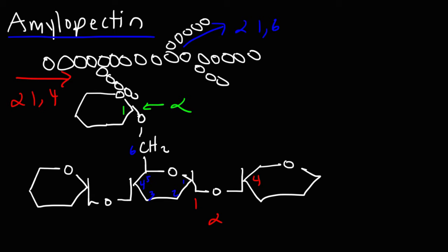So amylopectin contains two types of glycosidic bonds. The alpha 1,4, which is responsible for the straight chain part of amylopectin, and the alpha 1,6 glycosidic bond, which is responsible for the branching that we see in amylopectin.